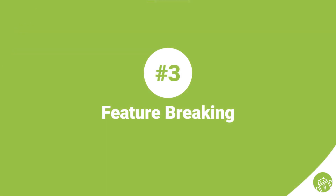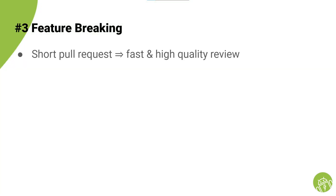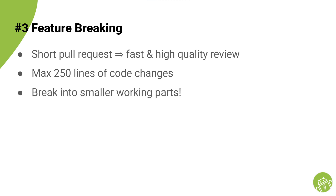Number three: feature breaking. As a rule of thumb, short pull requests get faster and higher quality reviews. Studies show that a pull request shouldn't go higher than 250 lines of code changes to receive a fast and high quality review. Therefore, break your feature into smaller working parts — meaning they shouldn't break the build or the app functionality. Another positive point about small changes is that they get merged fast, which avoids keeping a branch for a long time and, as a result, no merge conflicts.